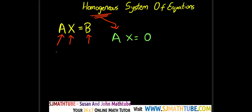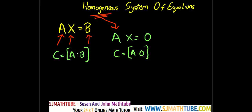So here we have the augmented matrix A|B. In the case of a homogeneous system, the augmented matrix will be A accompanied by 0. Now, when we try to solve equations using echelon form or rank method, we use only row operations — we never go for column operations. That means this last column is not going to make any difference. So what I am trying to convince you here is that rank of C will always be equal to rank of A in the case of a homogeneous system.